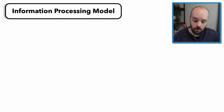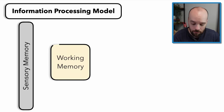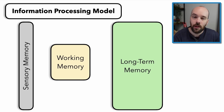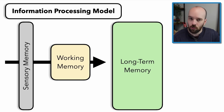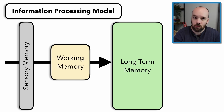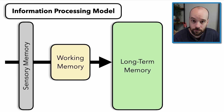By understanding this model about types of memory and the forgetting curve — which talks about how we forget most of what we learned the first time — you can make better decisions as a learner, do better on that upcoming test, or master a new skill more quickly. This model is called the information processing model. In it, there are three types of memory: sensory memory, working memory, and long-term memory. The goal is to get information from sensory memory into long-term memory, where we can store and use it in the future.